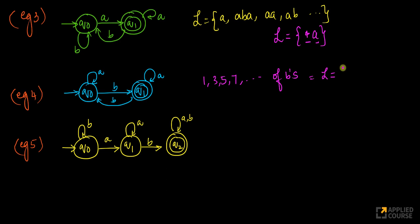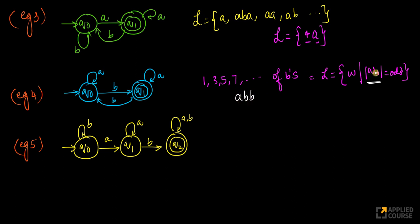The language accepted by this is words such that the number of b's in the word is odd, often written as |w_b| is odd. Here, w_b is the subsequence of w which consists only of b's. For example, if you have 'a, b, b', then w_b is the string of only b's. Similarly for 'a, b, a, b', w_b consists only of b's. If the number of b's is odd, such a string will be accepted.